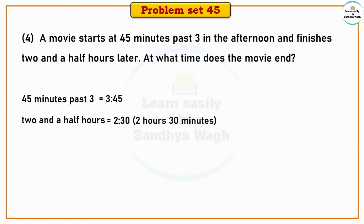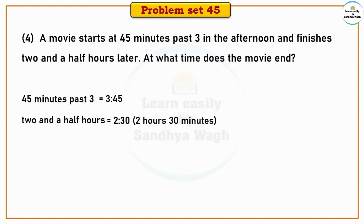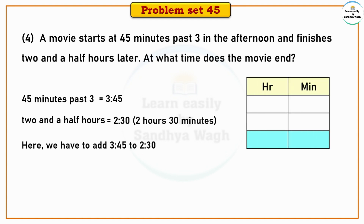Two and a half hours means 2 hours 30 minutes, i.e., 2:30. We need to find when the movie ended, so we have to add the start time to the duration. We add 3 hours 45 minutes plus 2 hours 30 minutes. We write hours in the hours column and minutes in the minutes column.